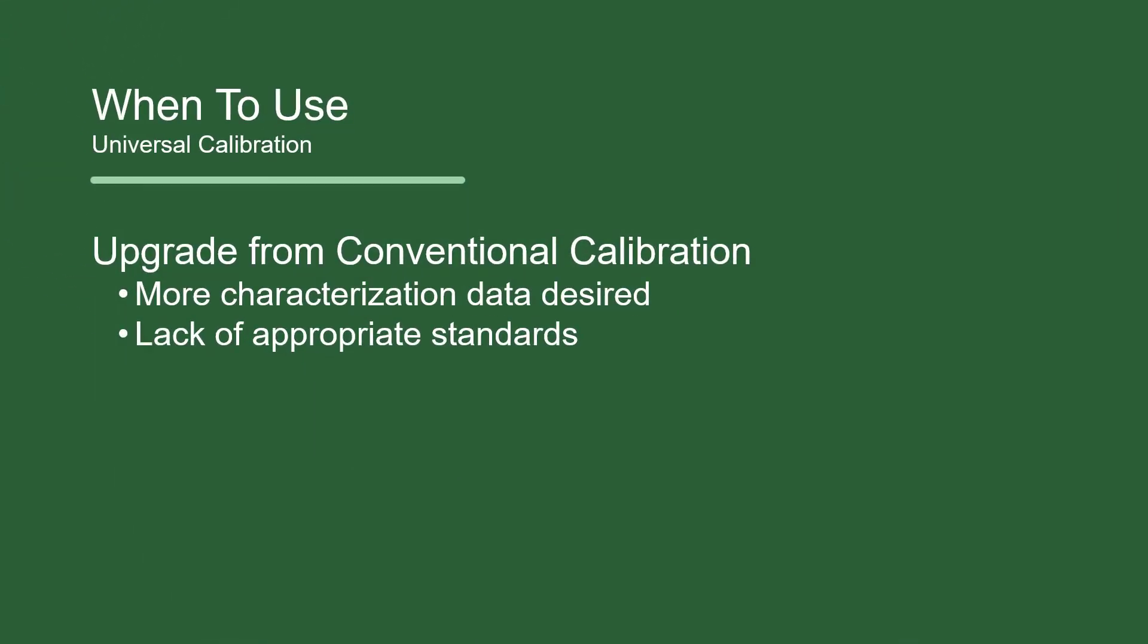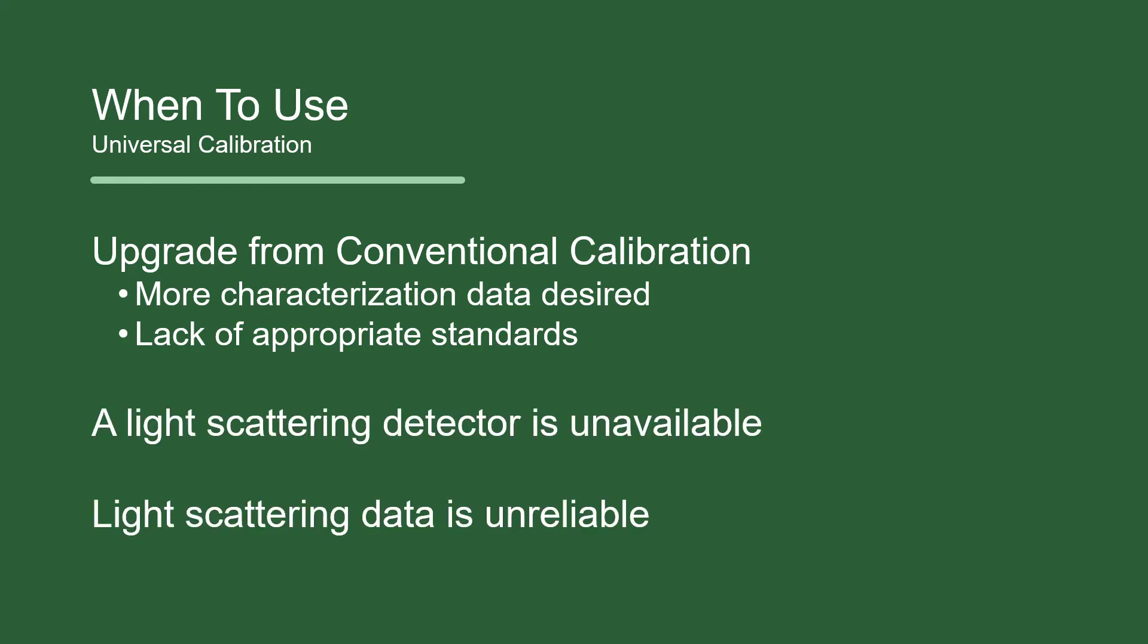Universal calibration is often used in one of two situations: to upgrade from a single detector conventional calibration method, or because data from a light scattering detector is unavailable or unreliable.